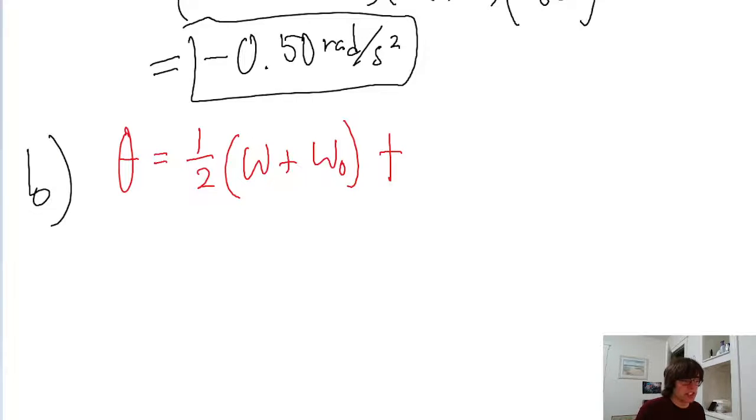Now that we have all these other variables except for t, we can just algebraically solve this for t. This is some pretty simple algebra. We just divide both sides of the equation by 1 half omega plus omega naught. We find that t is equal to 2 theta divided by omega naught plus omega.